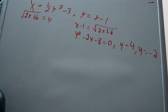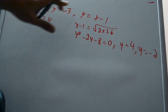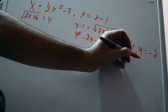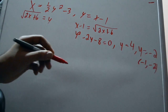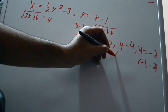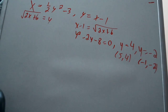From y-squared minus 2y minus 8 equals zero, we get y equals 4 and y equals negative 2. This tells us where the graphs intersect. Plugging back into the equations, the two intersection points are (-1, -2) and (5, 4). This tells us what limits to use when we do the integral.